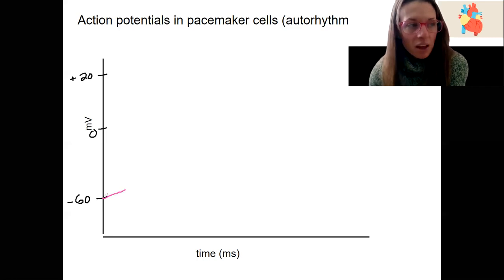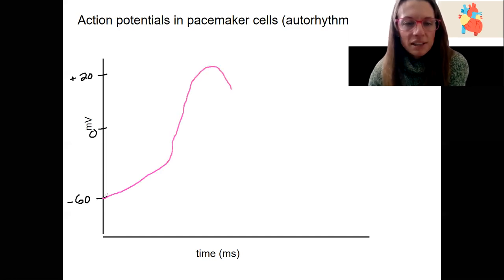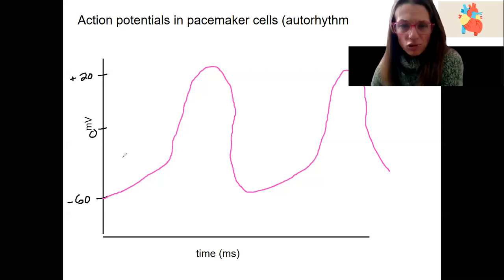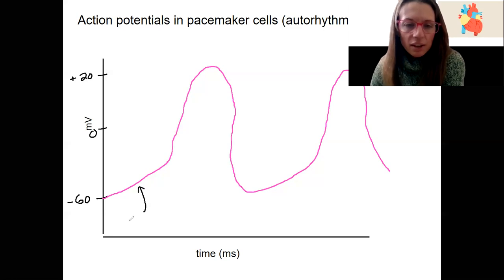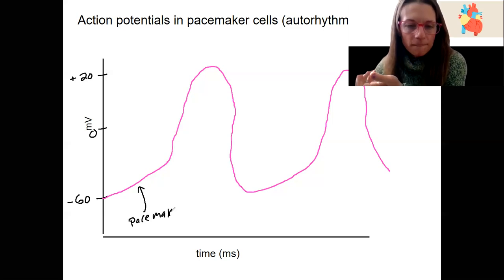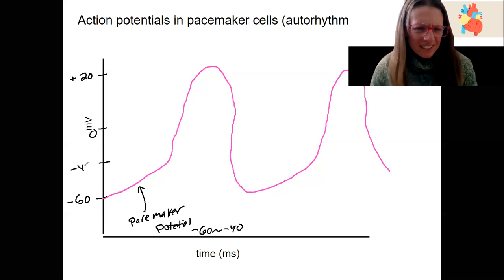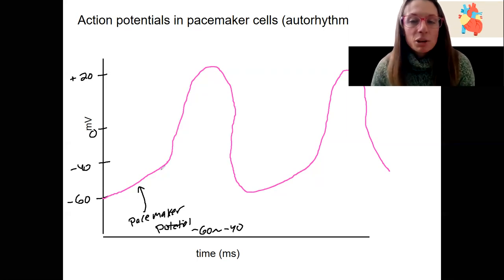I'm going to start at minus 60 and we're going to go up, then go up some more, then back down, then up again. This is called a pacemaker potential. The pacemaker potential is somewhere in between minus 60 to about minus 40 — it's probably more like 30 — which means this slow incline until we reach threshold.